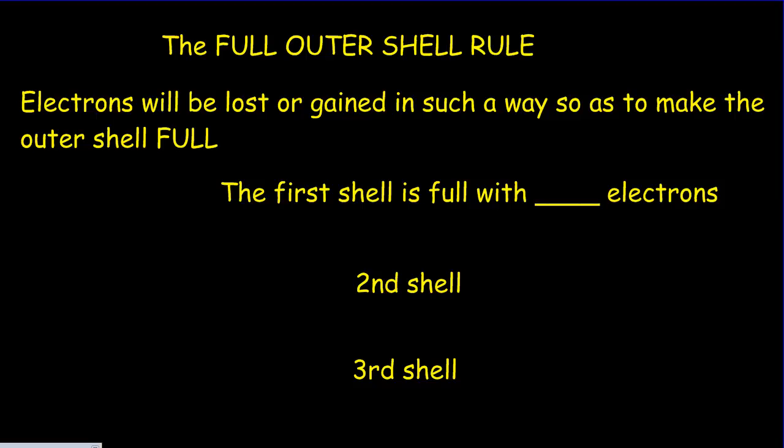So if this is our nucleus and we've got orbits out here, then there's a maximum number of electrons that can be had in each of the orbits. We're only going to study the first few orbits. The first shell can only have a maximum of two electrons, the second shell a maximum of eight electrons, and the third shell a maximum of eight electrons as well, at least for our purposes.